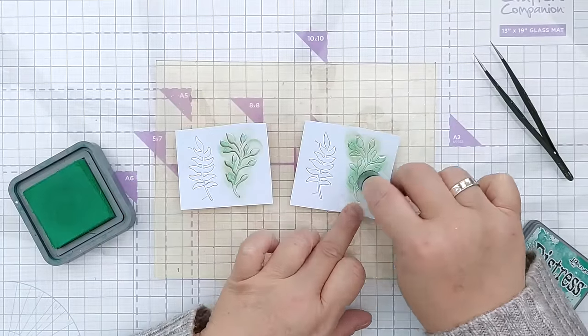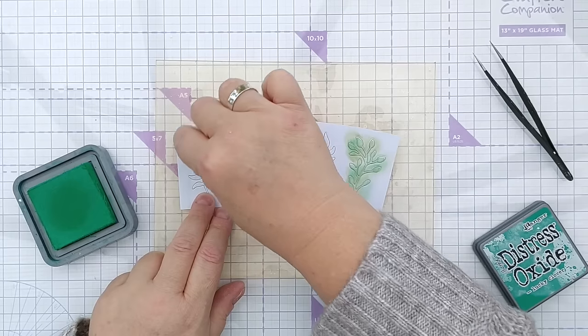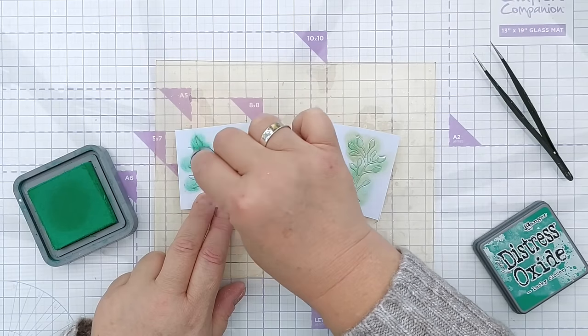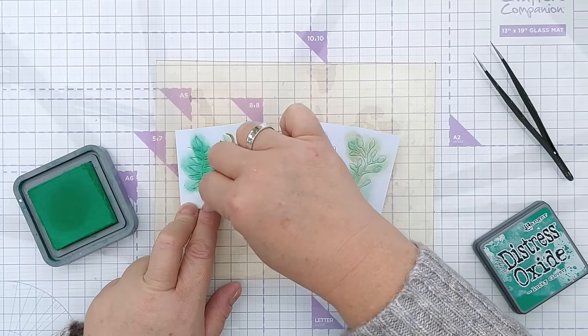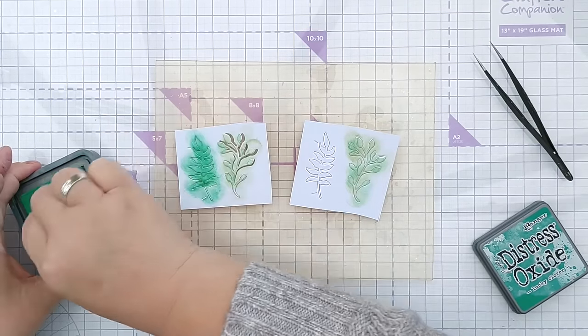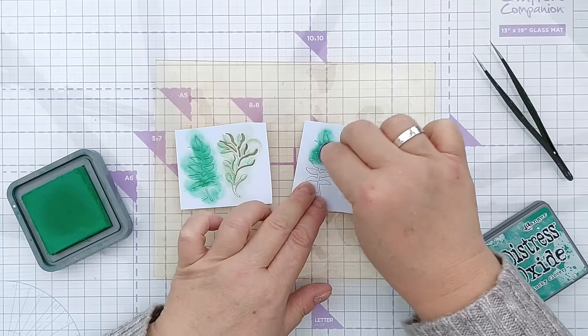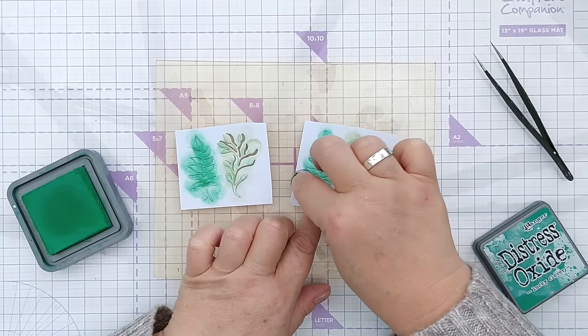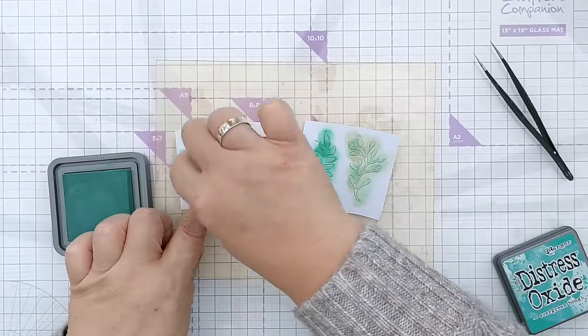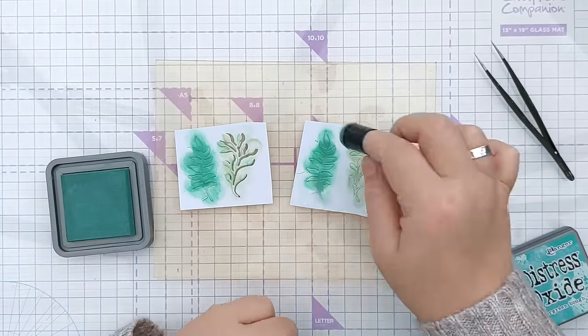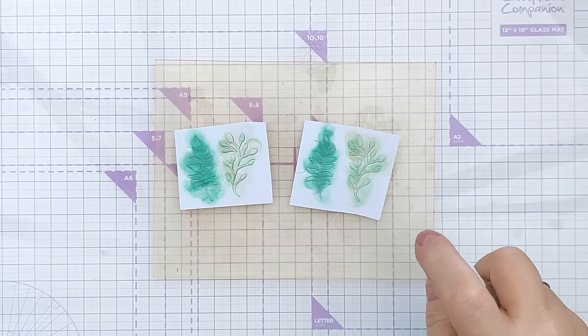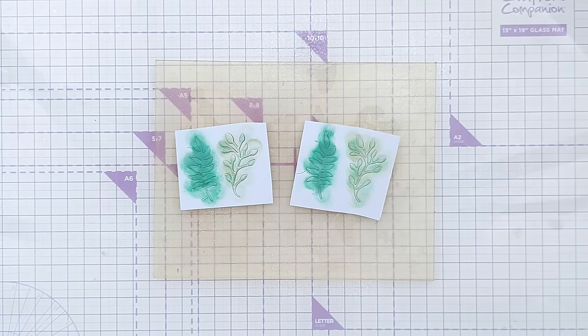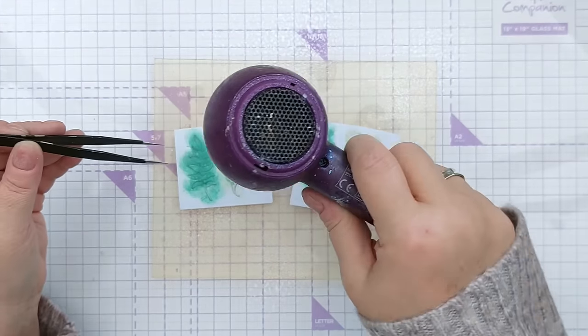I then used lucky clover on the other two die cuts. I put down quite a generous application and then I used evergreen bough distress oxide to add another bit of variation onto the lucky clover die cuts. Next I brought in my DIY shimmer spray which has white shimmer in it and spritzed it on, then dried them with my hairdryer and set them to one side.